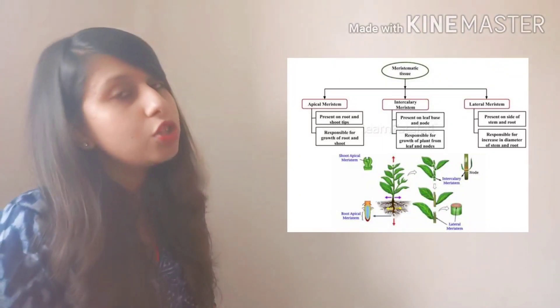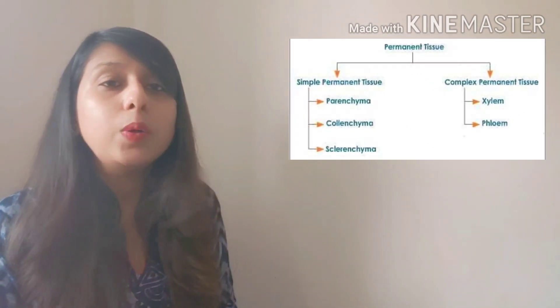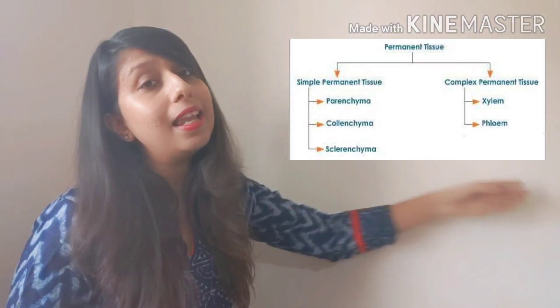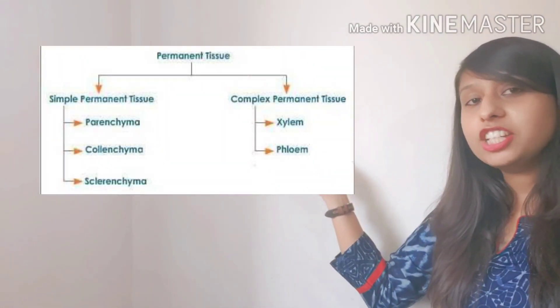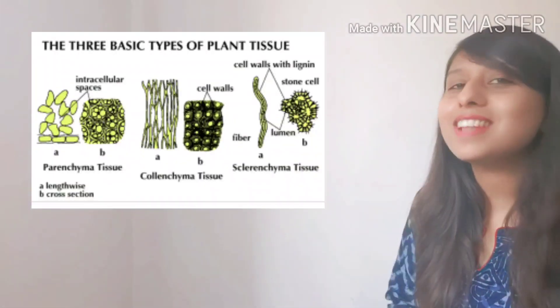I hope you understood meristematic tissue well. The tissue mainly responsible for the growth of the plant is the meristematic tissue, which has three types: apical, lateral, and intercalary. Now let's move on to the permanent tissue. This permanent tissue is also of two types: simple and complex. From now onwards, you are going to hear many Latin and Greek origin words — but don't get too much affected by it, it is going to be easy. As it is said, don't judge the book by its cover. So let us get started.